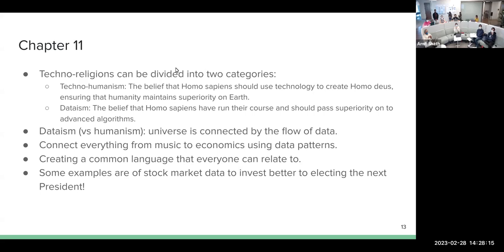And then that can be divided into two categories: one where humans still have their say in it, and the other would be purely based on data. So instead of humanism, it would be called dataism. And the reason it's called dataism, because it's going to get all its decisions from the data. And it says that he defines dataism as the one where the universe is connected by the flow of data. Everything is connected to everything somehow, right from music to economics, using some data patterns which could be very visible or those could be latent. And then creating a common language that is going to make sense of such data. So some examples would be, even today we are using such kind of data, but in futuristic world you could make extremely informed decisions using like the stock market data or electing the next president.